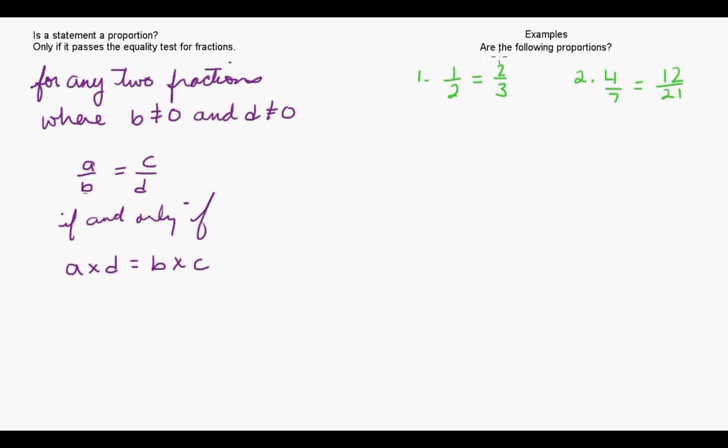Here we're going to find out if the following are proportions or not. So we have one-half equals two-thirds. We're going to take one as our A value, two is our B value, this two is our C value, and this three is our D value. If we substitute into this we'll get one times three equals two times two.